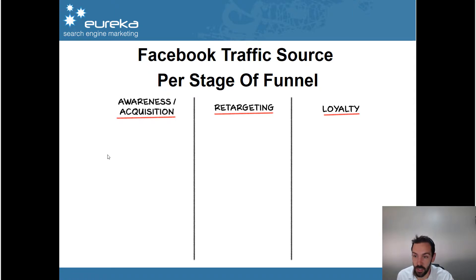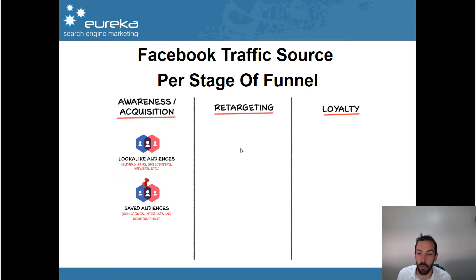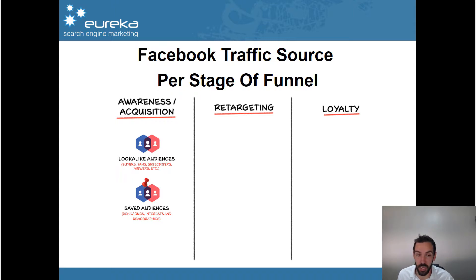So the types of traffic we use and how we use them — we like to use lookalike audiences and saved audiences in that awareness and customer acquisition stage. We'd like to run video because it adds a different level in terms of the retargeting stage. Different types of lookalike audiences include those based on buyers, based on the fans of your page, based on subscribers — if you've got a lead magnet, a free report, a free checklist where people sign up and you get their mobile phone number or email address — and then lookalike audiences based on viewership.